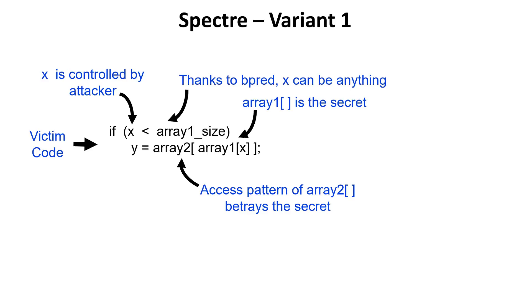In this case, I'm assuming that I have an attacker program and a victim program, and both of these programs are running on the same server. This attacker is trying to steal the secrets that belong to this victim program. The attacker is actually sending queries to this victim, and the victim is accepting these queries and then performing certain operations. The attacker is actually able to control some of the variables inside the victim based on the queries that it is providing.